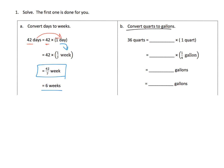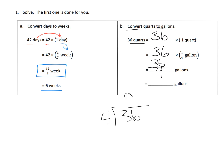We're going to convert quarts to gallons. 36 quarts is 36 copies of one quart. A quart is a quarter of a gallon. So we have 36 times one fourth, which is 36 fourths. 36 divided by 4 is 9, so it's 9 gallons — a very algorithmic approach.